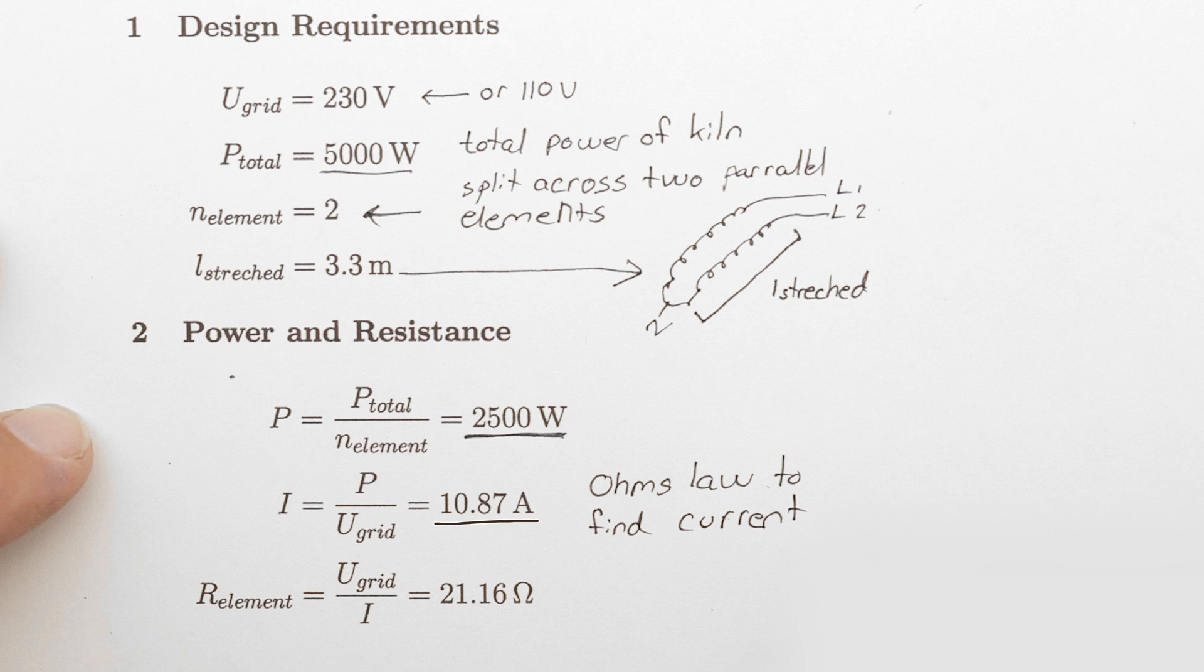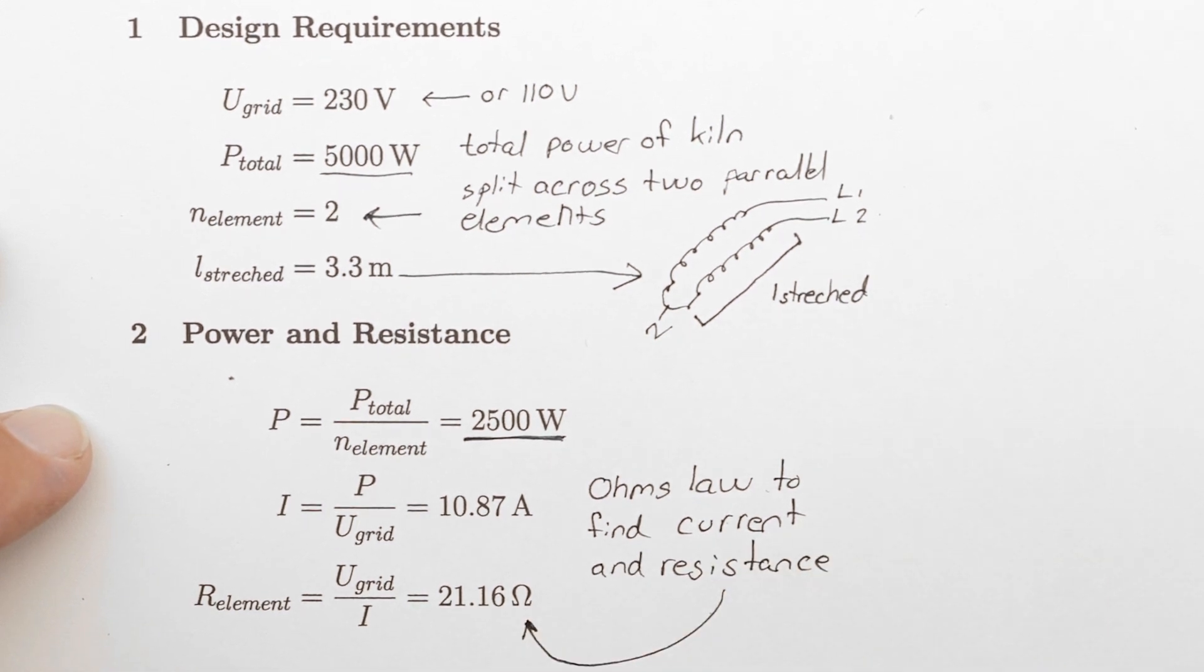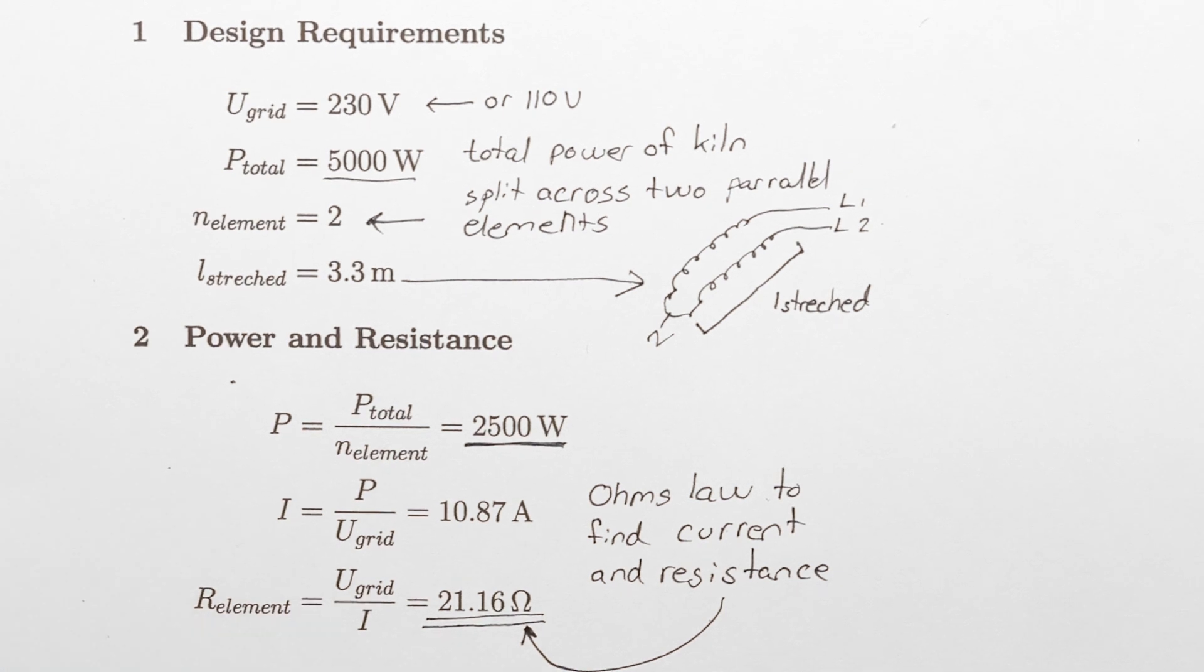Knowing the voltage and the current lets us calculate the resistance needed, again by using Ohm's law. This results in a target resistance of 21.16 ohms.